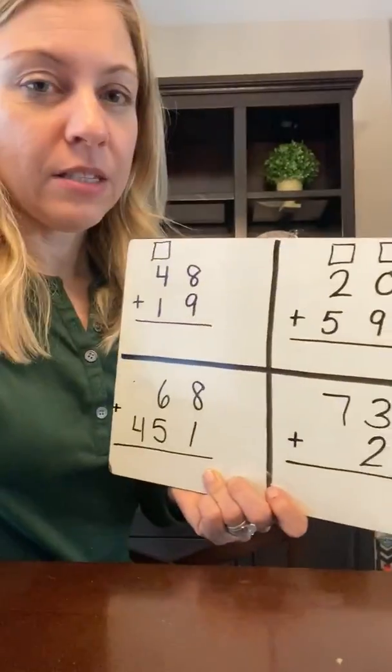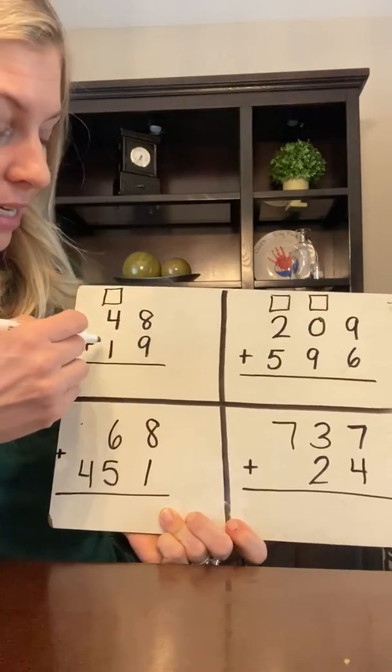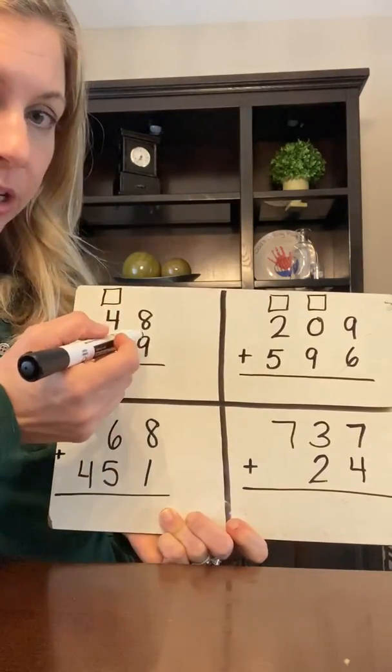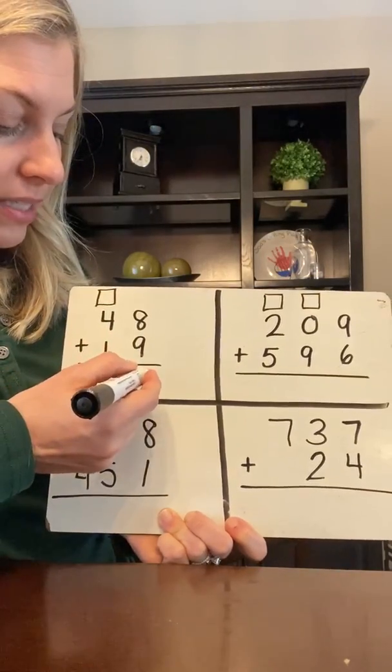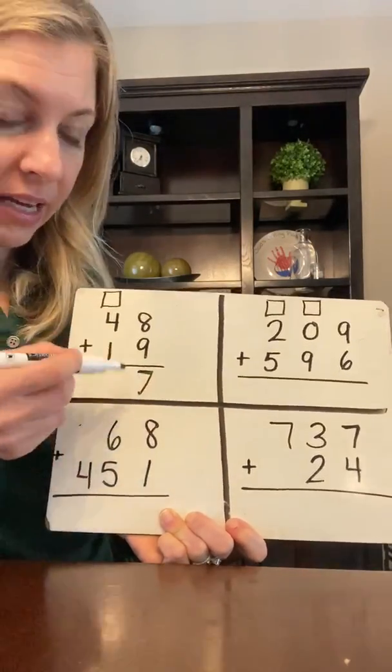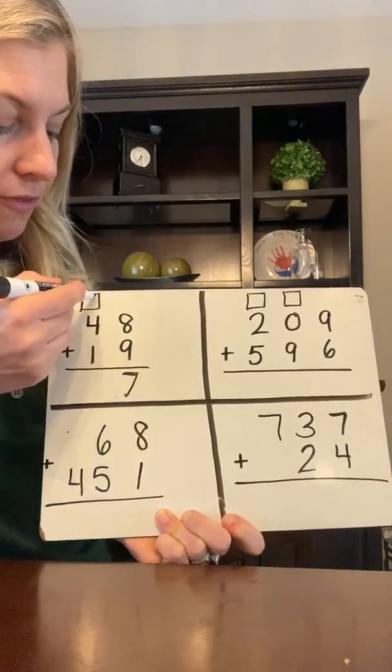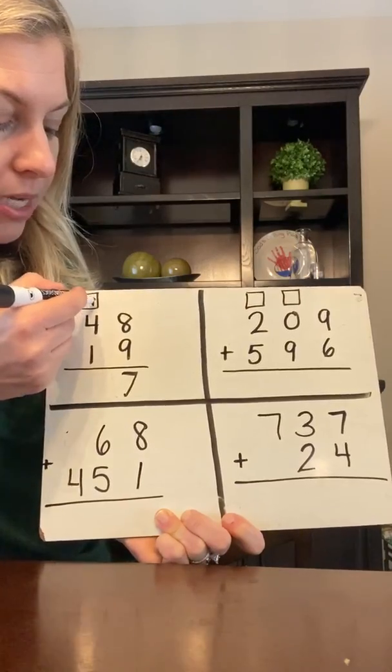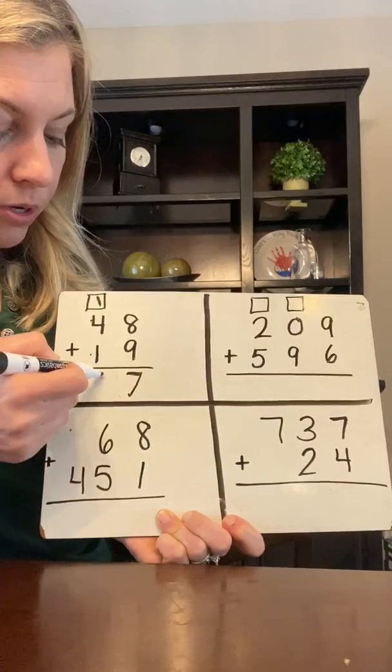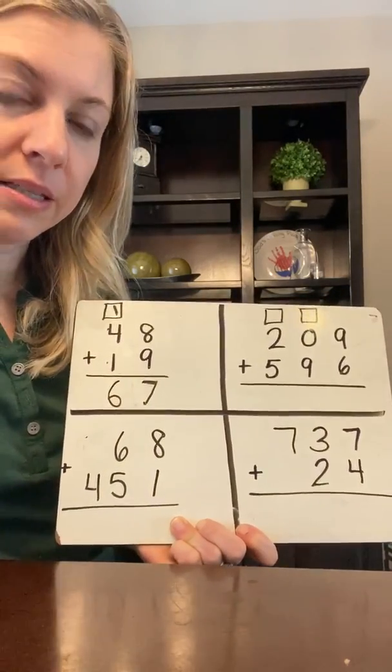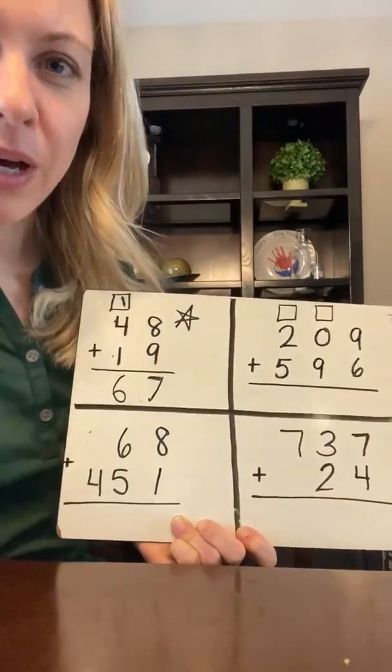Looking at this one to the side, we'll start over here with 48 plus 19. I always look at the ones. Eight plus nine was 17. I cannot put 17 here because there's a group of 10. I have to move it, move it. The one comes up top. One plus four is five and one more is six. Your answer was 67 for that one. Give yourself a star or a happy face if you got that one right.